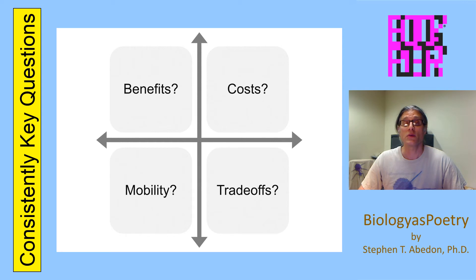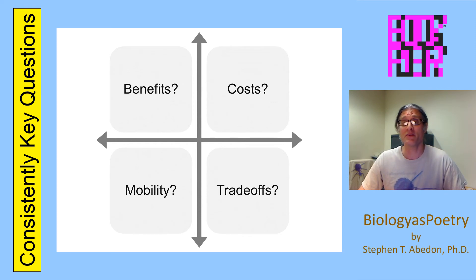In other words, why does the organism possess the adaptation? What limitations are there on the evolution of that adaptation? Where did the adaptation come from — strictly via mutation or instead via horizontal gene transfer? And how is that adaptation affecting the functioning of the rest of the organism?